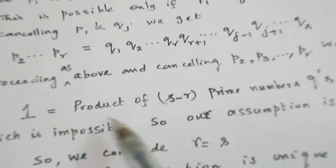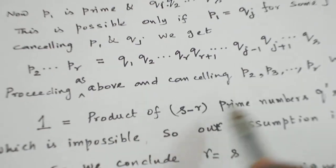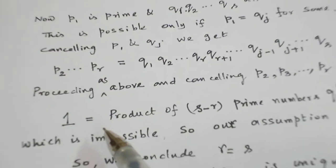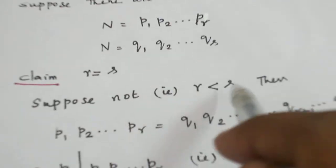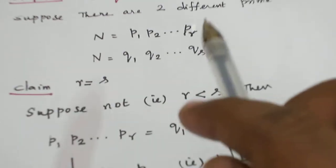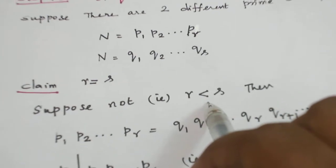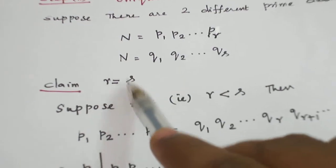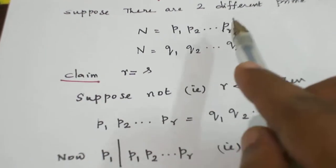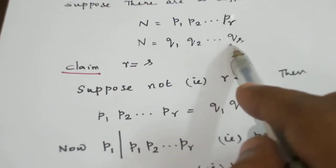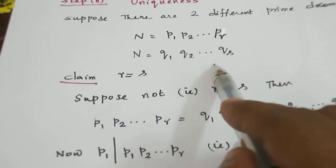Now this result is impossible — a product of prime numbers cannot be equal to 1. So we have a contradiction. This contradiction arises due to our assumption that r < s, so that assumption is wrong. Therefore the correct conclusion is r = s.